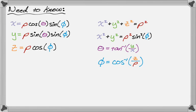You also need to know that x² + y² + z² = ρ², and that x² + y² = ρ²sin²(φ). I feel like that's the weirdest of all of these.